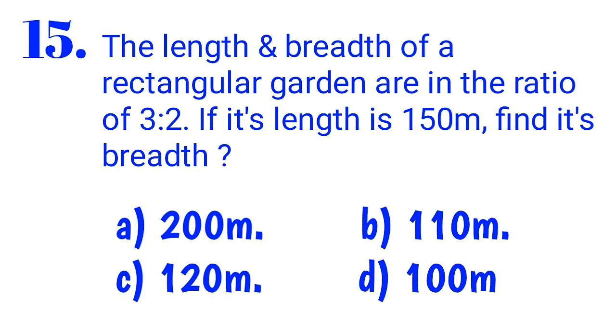The length and breadth of a rectangular garden are in the ratio 3 to 2. If its length is 150 m, then find its breadth.